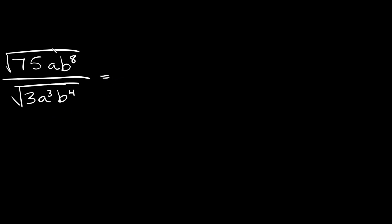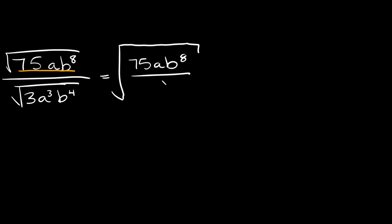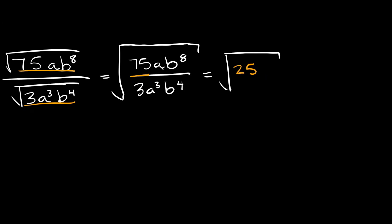Here's our last problem. Again we have a radical over a radical, so we combine everything under one big radical. On top we have 75ab to the eighth, over 3a cubed b to the fourth. Let's simplify: 75 divided by 3 equals 25. For the a's, we have 1a on top and 3a's on the bottom — the 1a cancels one from the bottom, leaving a squared on the bottom. For the b's, 8 on top and 4 on the bottom — the 4 cancels, leaving b to the fourth on top.